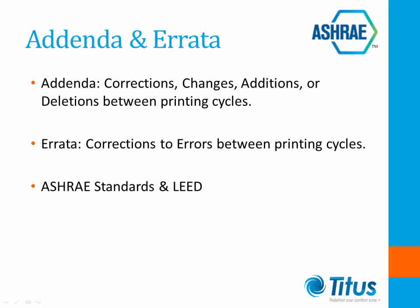This means that there are always active project committees working on keeping these standards up to date. When changes are approved by the standards committee, they are listed on the ASHRAE website as either addendum or errata. Addendum are changes to the content of the standard such as information from an active research project. Errata are corrections to the standard shown from the last printing. Both addendum and errata are published on the ASHRAE website and are included as a part of the standard. Continuous maintenance standards are reprinted every three years and include the addendum and errata identified since the last printing.